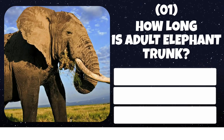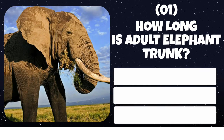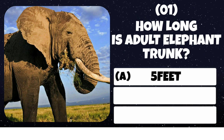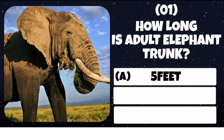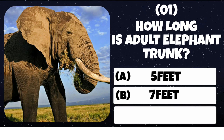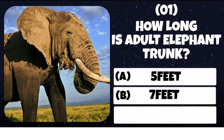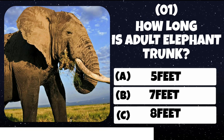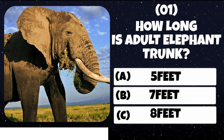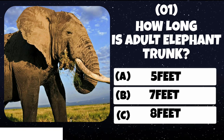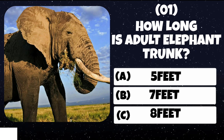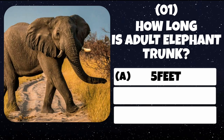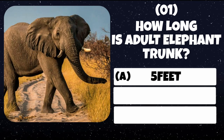Question number 1. How long is an adult elephant's trunk? Option A: 5 feet. Option B: 7 feet. Option C: 8 feet. Correct answer is 5 feet.